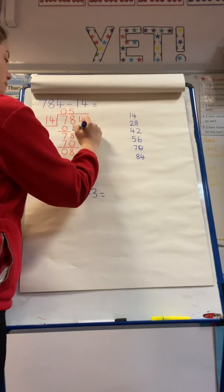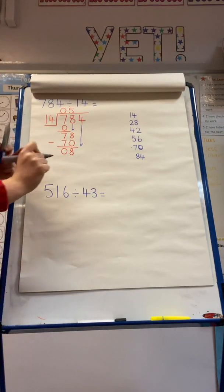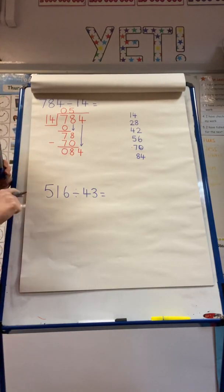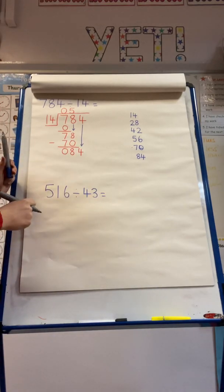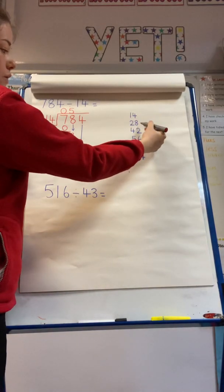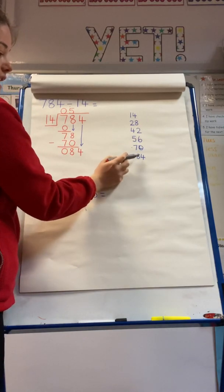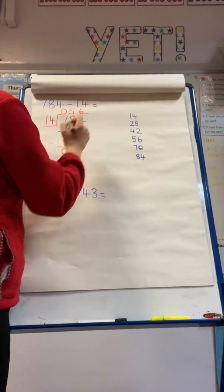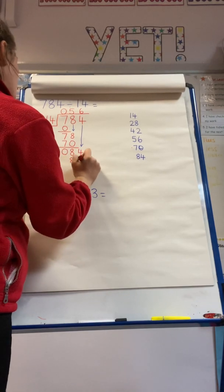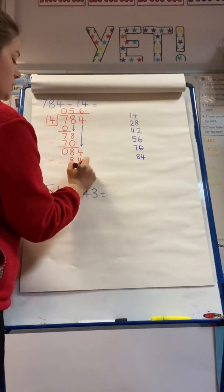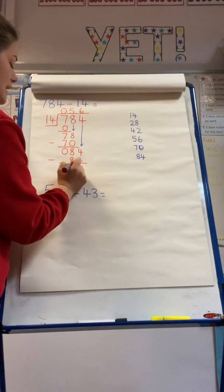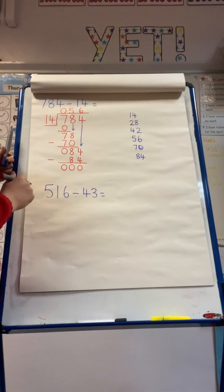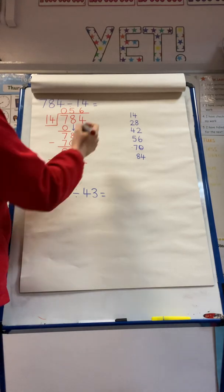Now I need to bring my 4 from the 1s column down to join my 8. I'm now looking at how many multiples of 14 can go into 84. Referring back to my 14 times table, I can see that 1, 2, 3, 4, 5, 6 groups of 14 go into 84. If I subtract 84: 4 subtract 4 is 0, 8 subtract 8 is 0, and 0 subtract nothing is 0. So I can see that 784 divided by 14 is 56.